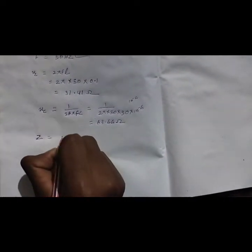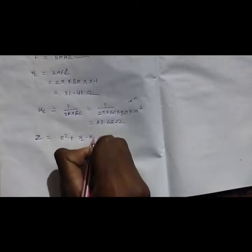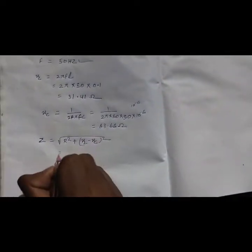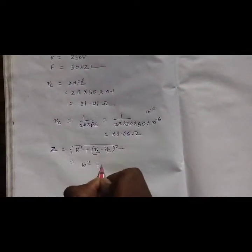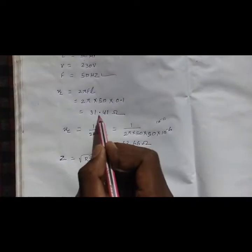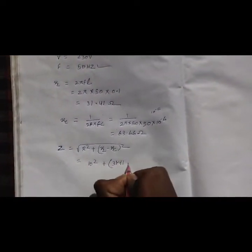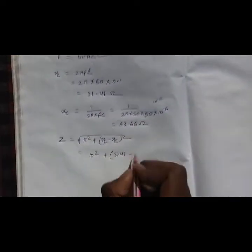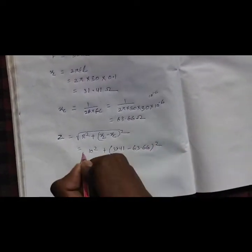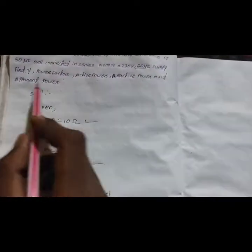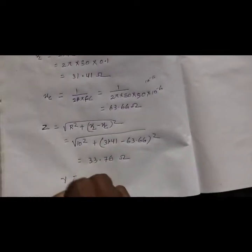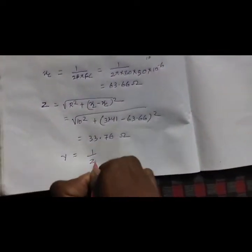Find impedance Z. Z = √(R² + (XL - XC)²), so equal to √(10² + (31.41 - 63.66)²), which equals 33.76 ohm.